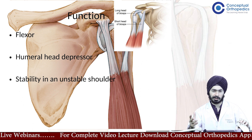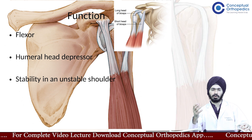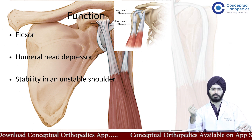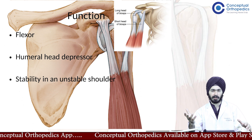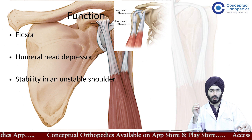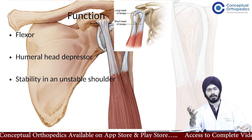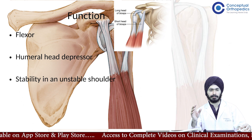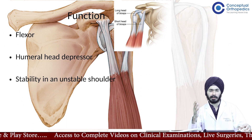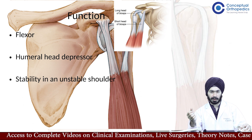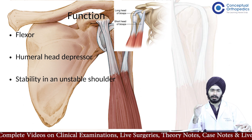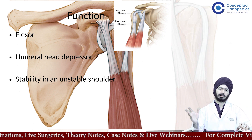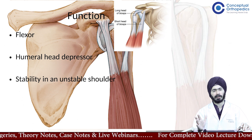The main functions of the long head of biceps: it acts as a humeral head depressor, and it gives some power to the flexion function of the biceps. However, the main flexor power comes from the short head, and the main flexor of the elbow is the brachialis. The long head has very limited function — some contribution to elbow flexion, humeral head depression at the shoulder, and some amount of stability in an unstable shoulder.